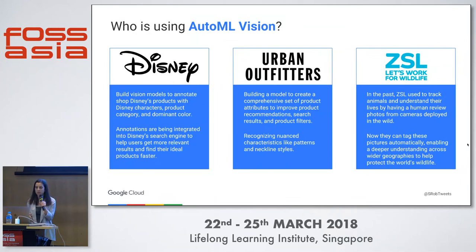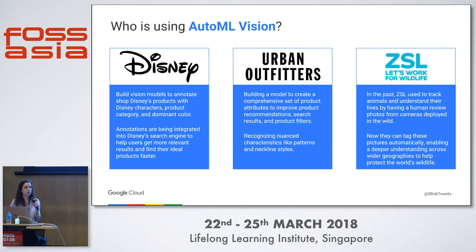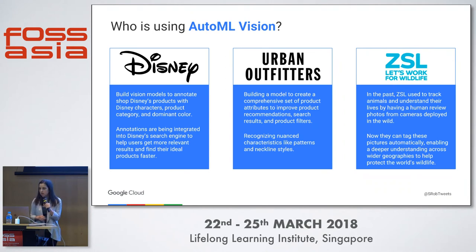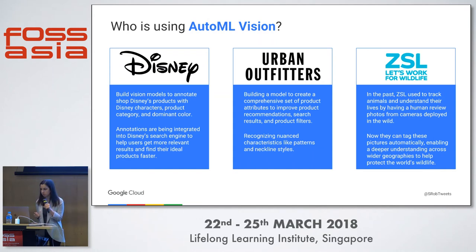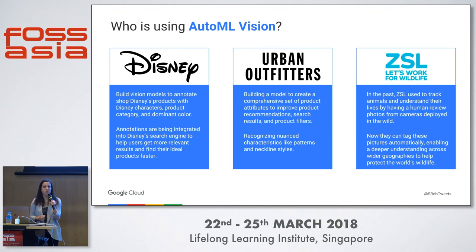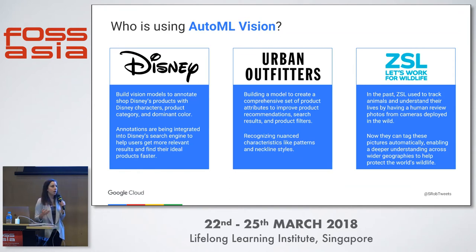Some companies using AutoML Vision in the Alpha: Disney built a custom model to recognize different Disney characters, product categories, and colors to improve their search engine. Urban Outfitters built a model to create comprehensive product attributes — recognizing things like patterns in shirts and different types of necklines that the regular Vision API wouldn't differentiate — to improve their search results. The Zoological Society of London has cameras deployed in the wild taking pictures of wildlife, and instead of having humans manually review images, they now have a custom model that automatically tags the types of wildlife in those images.